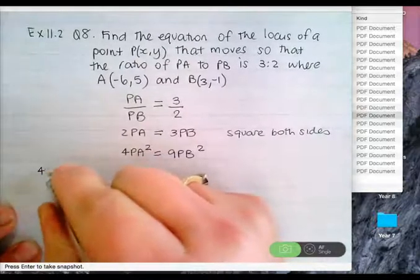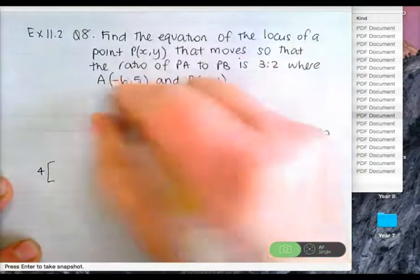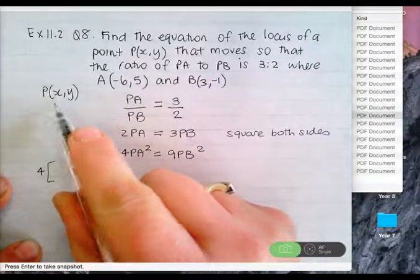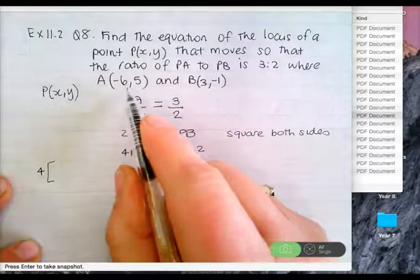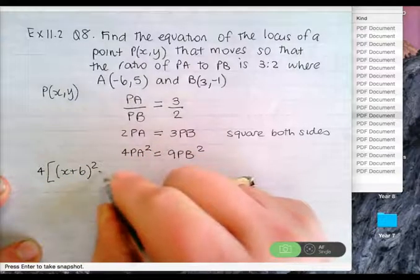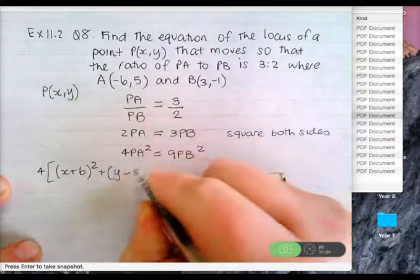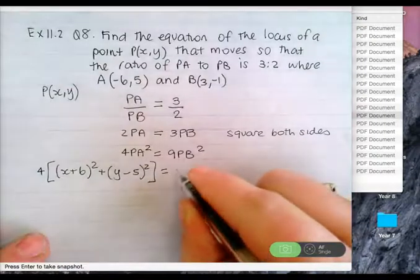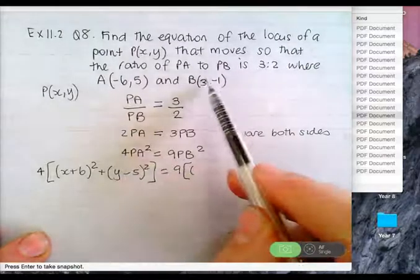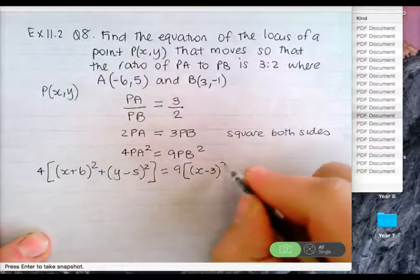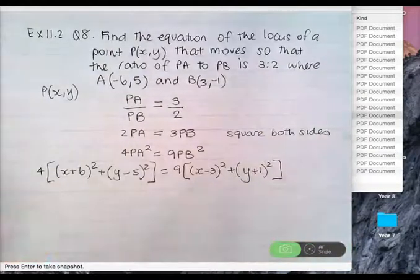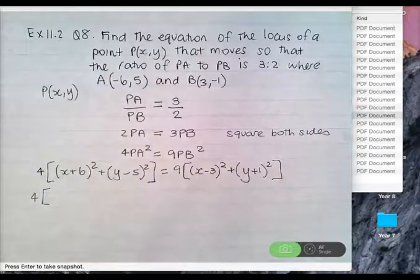So 4 times the distance PA squared: P is (X, Y) and we've got points A and B. PA is going to be (x plus 6) squared plus (y minus 5) squared, so it's 4 times all of PA squared. Nine times PB: (x minus 3) squared plus (y plus 1) squared. The x squareds and y squareds aren't cancelling this time because of the 4 and the 9.